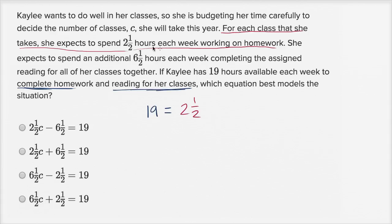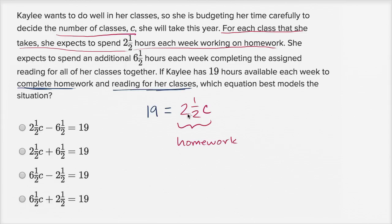Now how many classes is she taking? She's going to take C classes. So the total amount that she spends on homework is going to be 2½ times C. I'll put it in parentheses just to make it clear — 2½ times C is the amount she spends on homework.